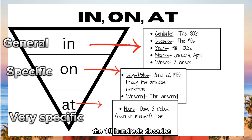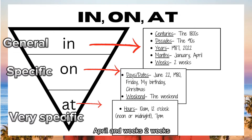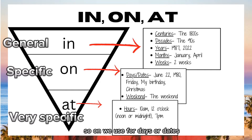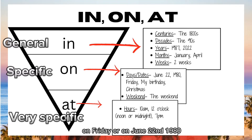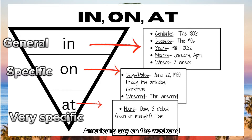We use 'in' for centuries (the 1800s), decades (the 90s), years (1987 or 2022), months (January, April), and weeks (two weeks). 'On' is more specific — we use it for days or dates: on my birthday, on Friday, or on June 22nd, 1980. For the weekend: Americans say 'on the weekend' and British people say 'at the weekend' — something to remember!